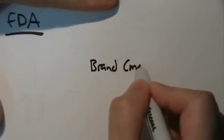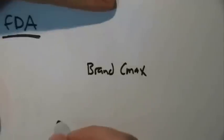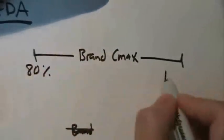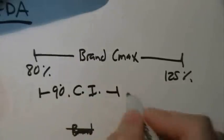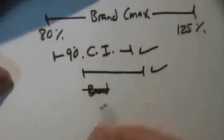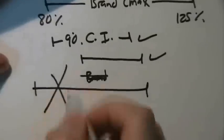The medical experts in the FDA specify that the 90% confidence interval of the Cmax and that of the AUC of the generic drug must entirely lie within 80% to 125% of the average Cmax and AUC of the brand.